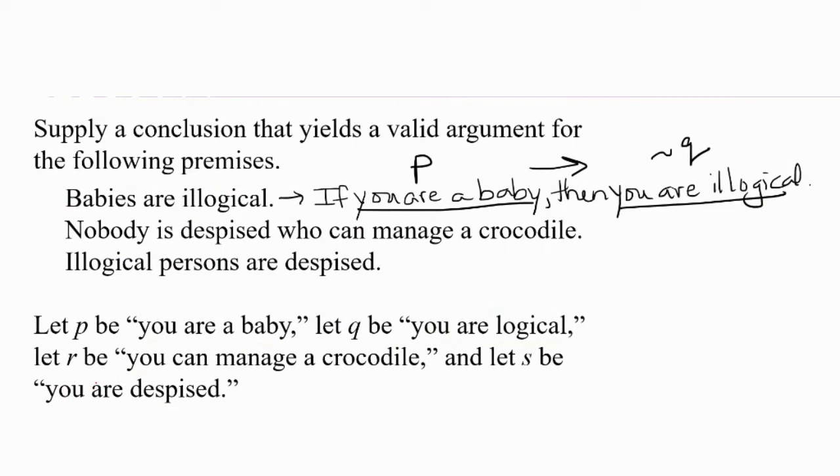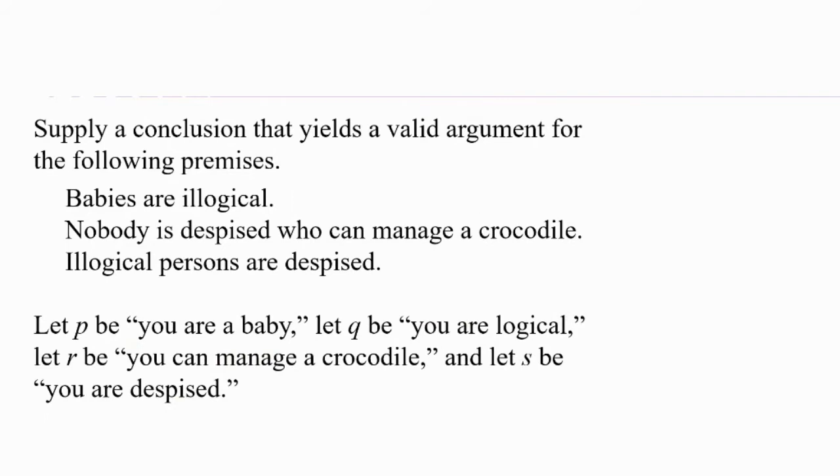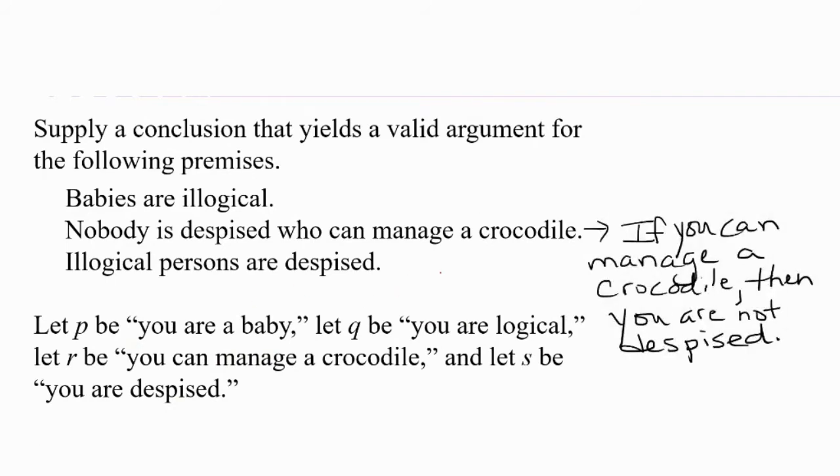Now, how could I write nobody is despised who can manage a crocodile? How can I write that as an if-then statement? Is that saying if you're not despised, then you can manage a crocodile, or if you can manage a crocodile, then you're not despised? That's right. If you can manage a crocodile, then you're not despised. How would we write that in symbolic form? Very good. R is you can manage a crocodile, so if R, then you're not despised would be R implies not S.